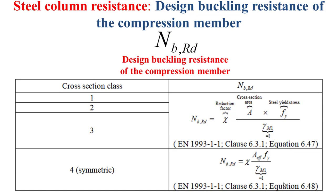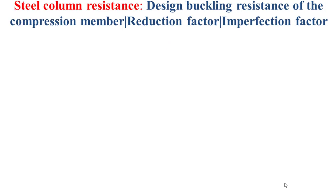For cross-section class four, we use the effective cross-section area A_effective instead of the cross-section area A. This is expected since we use the effective properties of the cross-section when dealing with cross-section class four. Now I will explain how to determine the reduction factor chi.